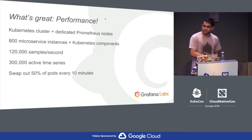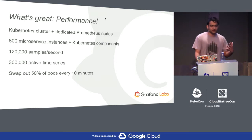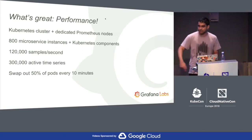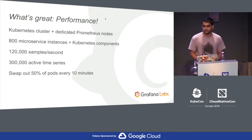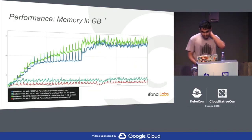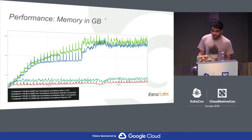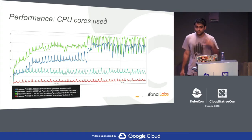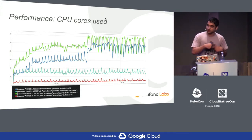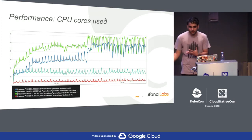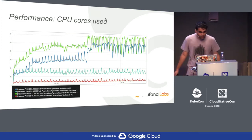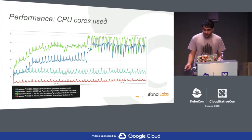We benchmarked Prometheus with the new database and the old one. We had a lot of load, and on top of that we restarted half of the pods every ten minutes — that's a lot of churn. It's as if you're deploying half your services every ten minutes, which creates a lot more time series and adds a lot of pressure. In terms of memory, we do 3 to 4x better than Prometheus 1.0. For CPU: Prometheus 1.0 takes about six CPU cores, but Prometheus 2.0 takes about one and a half — and if it's not being queried, very little.